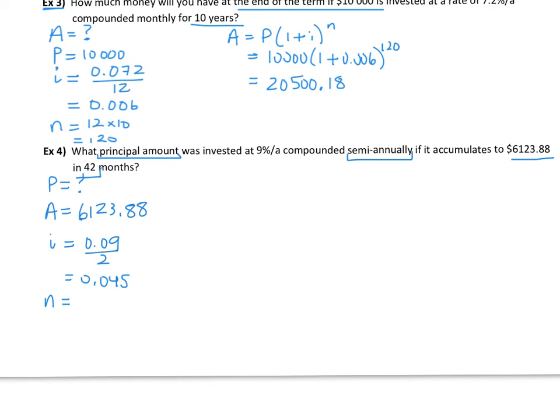So I'm going to see how many groups of six fit into 42 months. How many times will it actually compound? How many groups of six months can I make out of 42? And that gives us seven. So it's actually compounding seven times. So this is kind of a trickier question for sure.